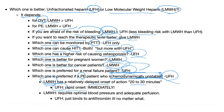Low molecular weight heparin has a relatively delayed onset — it can take up to 30 minutes. If the patient is dying right now and hemodynamically unstable, there's no time to waste. Give unfractionated heparin immediately for its rapid onset. There's another problem with low molecular weight: it requires optimal blood pressure and adequate perfusion. If the patient has hypotension and inadequate perfusion, low molecular weight is useless. Unfractionated heparin doesn't care — it binds antithrombin-3 and activates it to inactivate factors 9, 10, 11, and 12, no matter what.